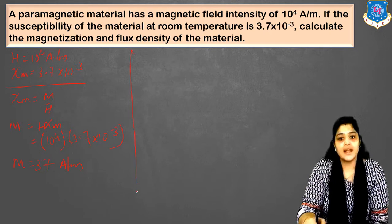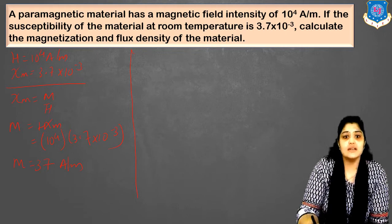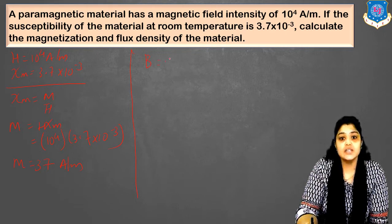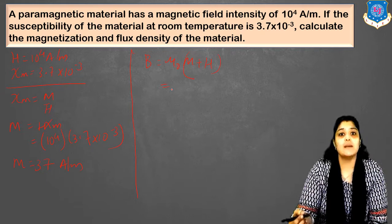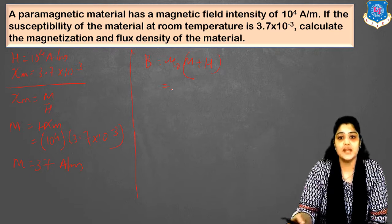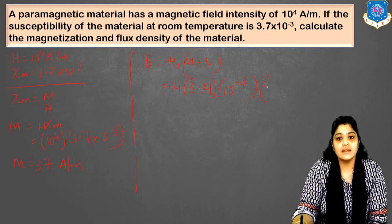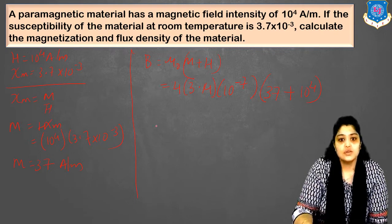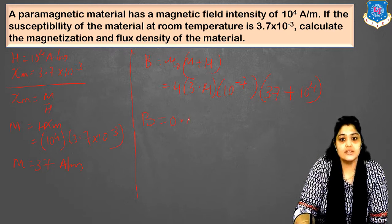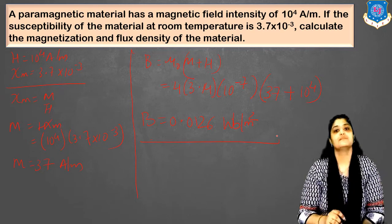Now you have determined the value of magnetization. For flux density B, we use B equals mu_0 into (M plus H). mu_0 is absolute permeability with value 4 pi into 10 raised to minus 7. Substituting: B equals 4 pi into 10 raised to minus 7 into (37 plus 10 raised to 4). Solving this gives B as 0.0126 Weber per meter square.